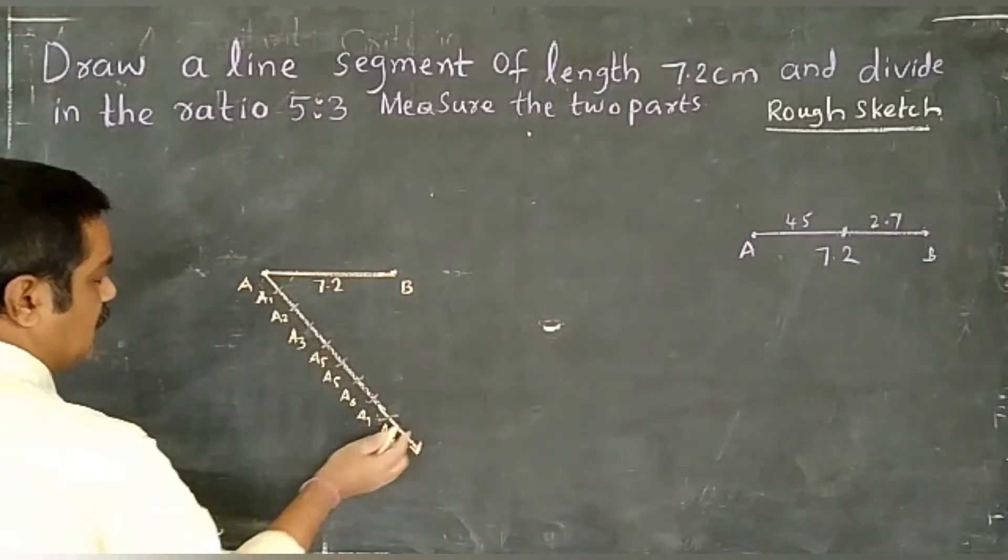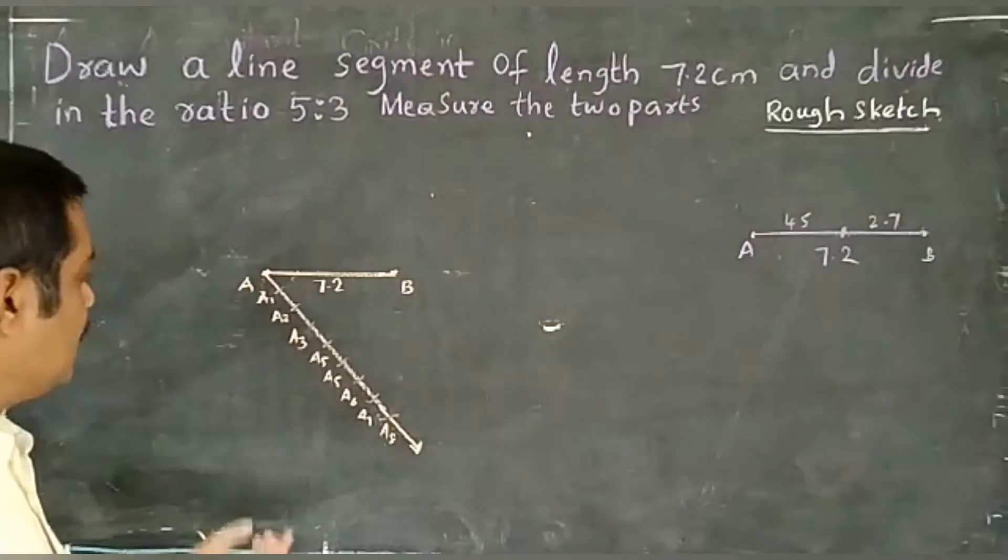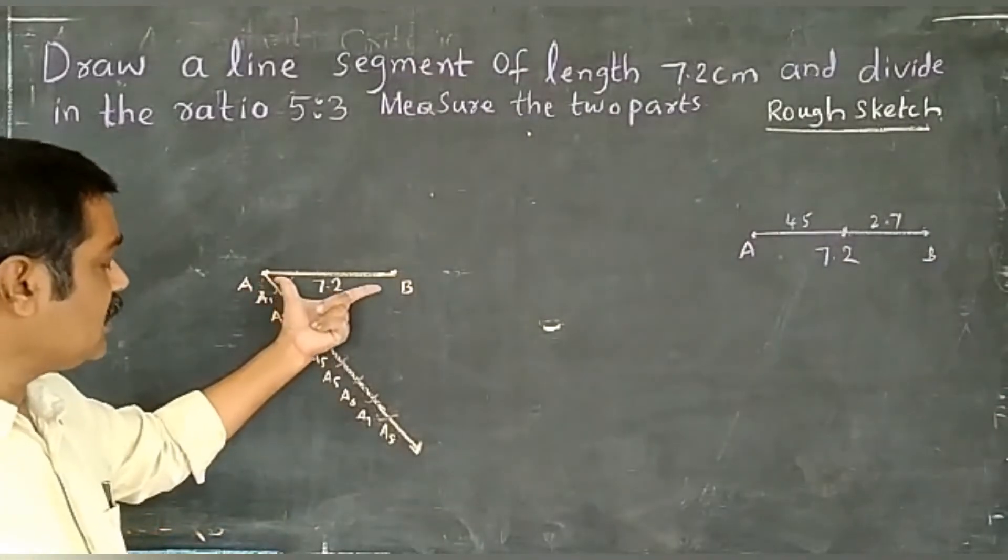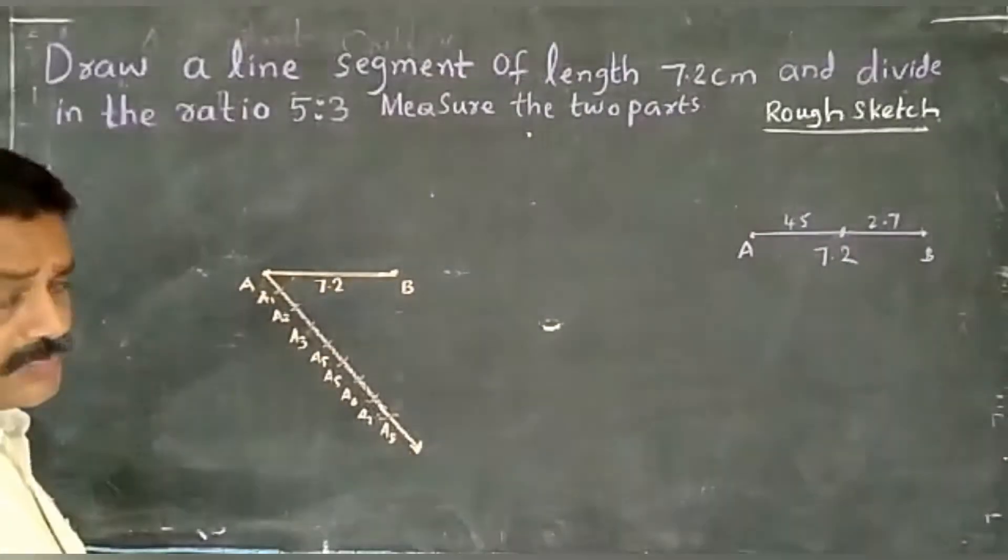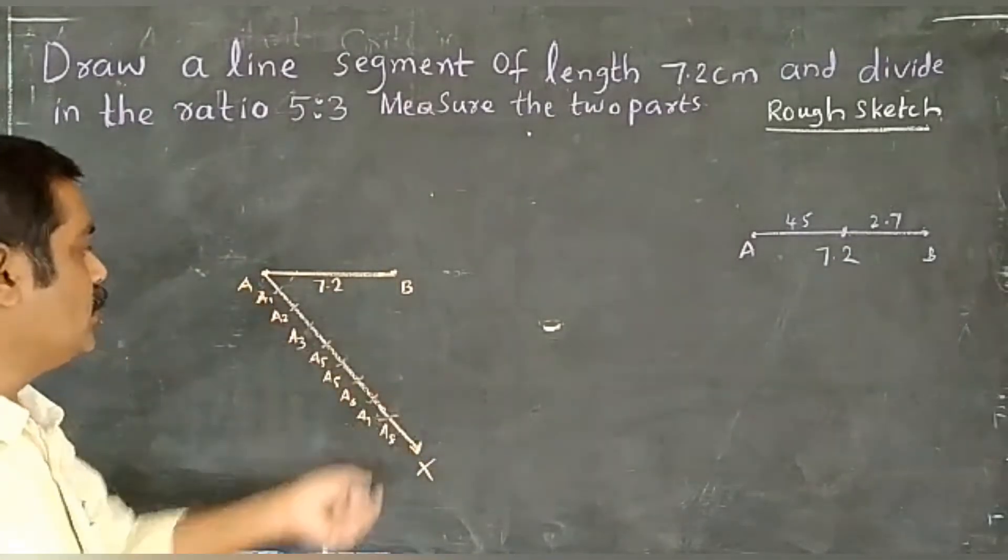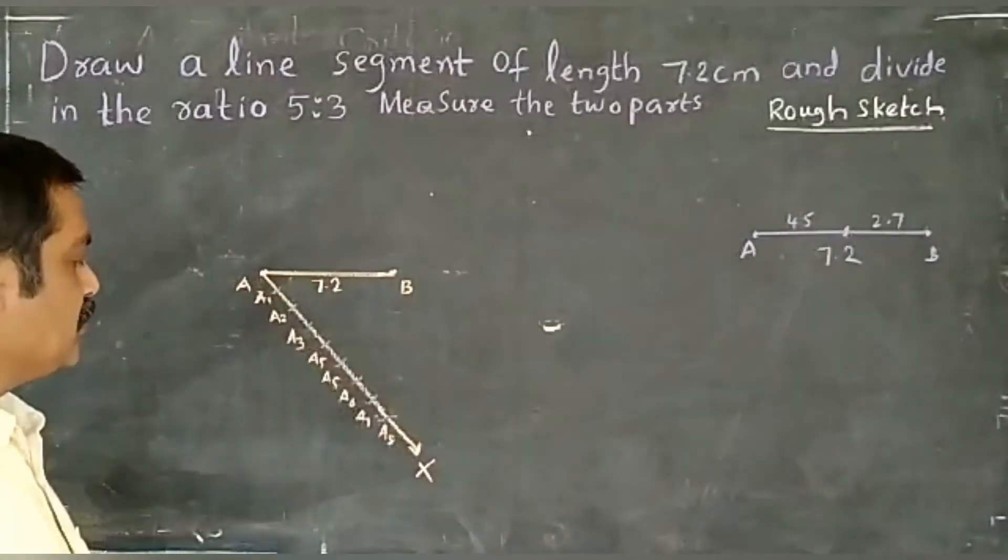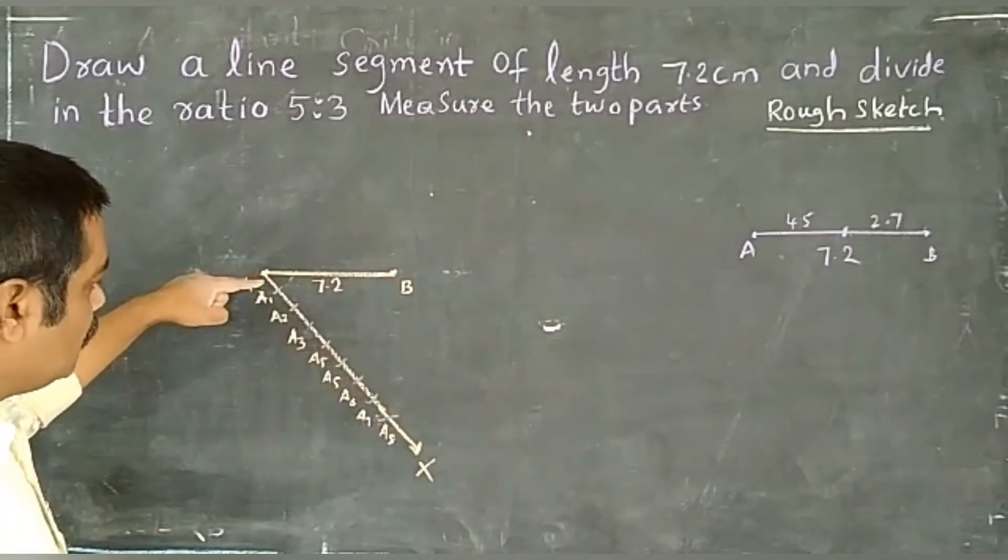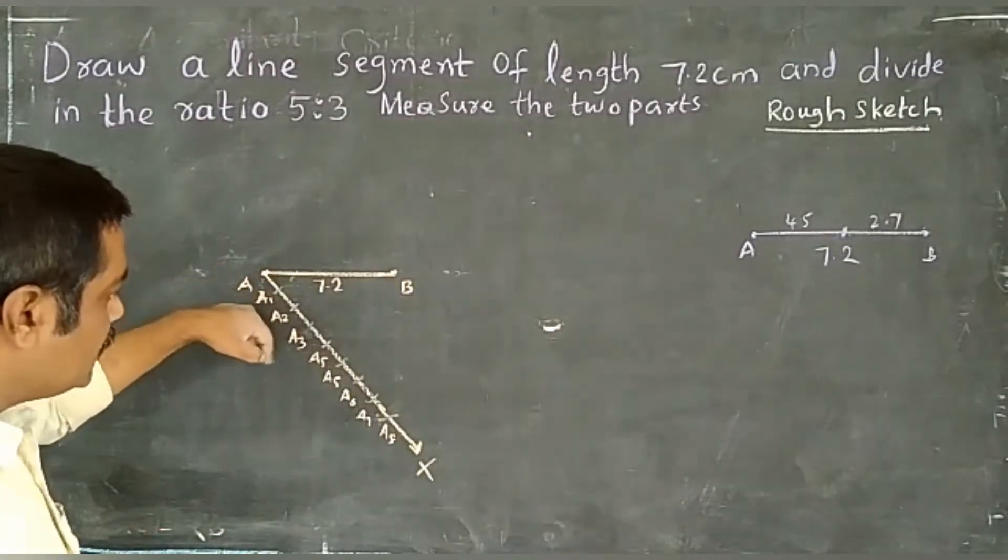Let's write the steps. First, what did I do? Draw a line segment AB equals 7.2 cm. Draw a ray AX where angle BAX is an acute angle. Mark A1, A2, A3,